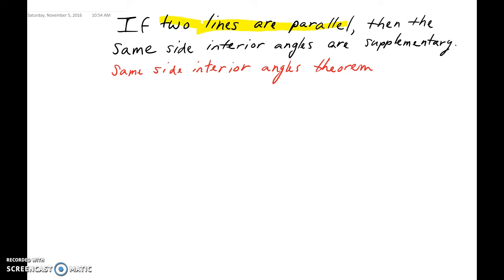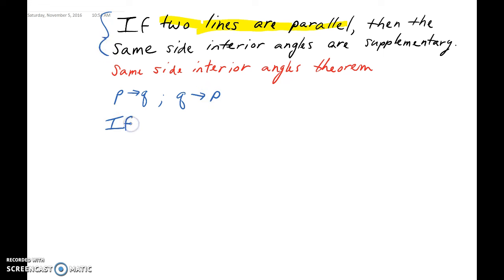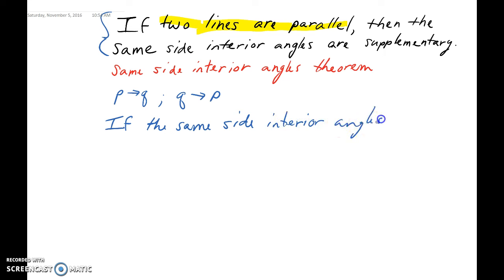Now in this section, if I ask you to write the converse of that statement — remember, the converse goes if P then Q, so if we have our hypothesis and our conclusion, the converse flips them. It becomes if Q then P. So the converse of this given statement would be: if the same side interior angles are supplementary, then the lines are parallel.